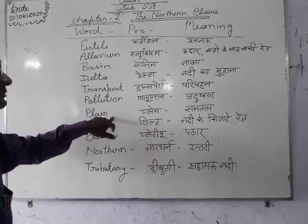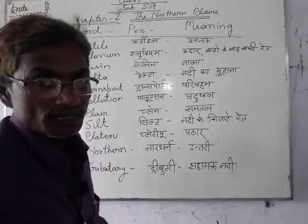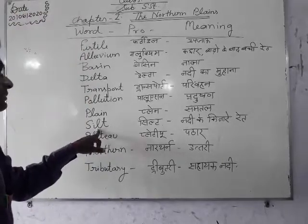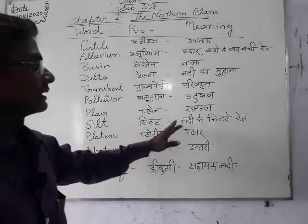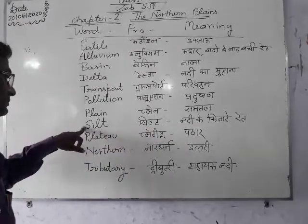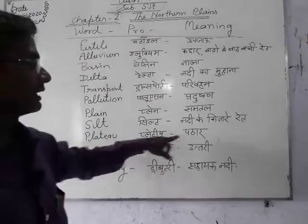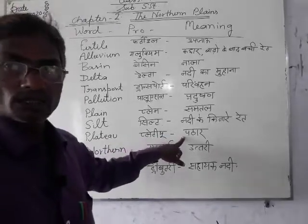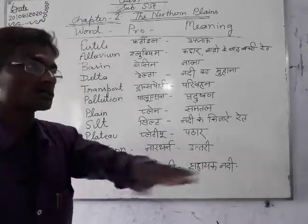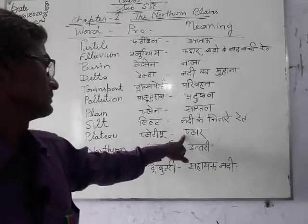Plane — समतल, बराबर की जमीन. Shield — नदी के किनारे का रेत. Plateau — पठार, पहाड़ों के कुछ समतल स्थान होते हैं, उसको पठार कहते हैं.